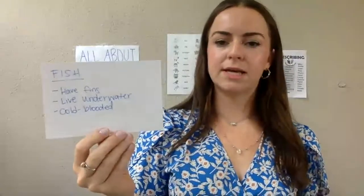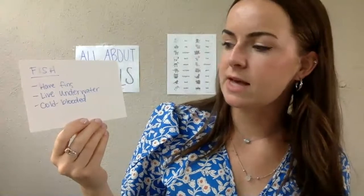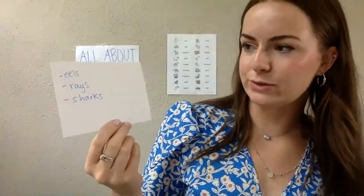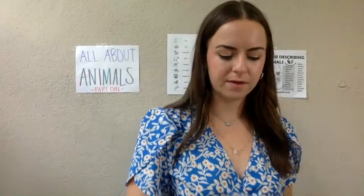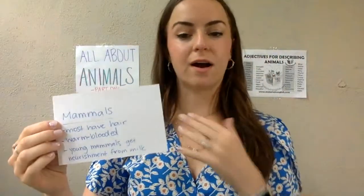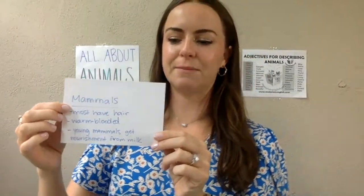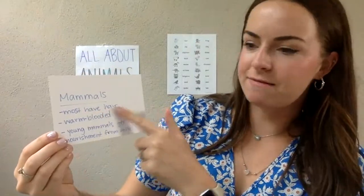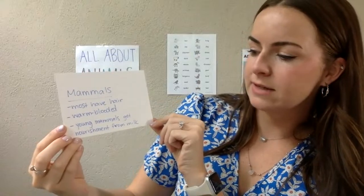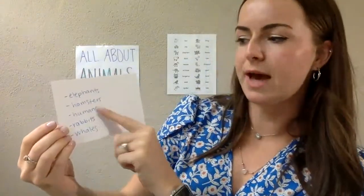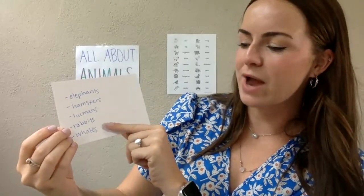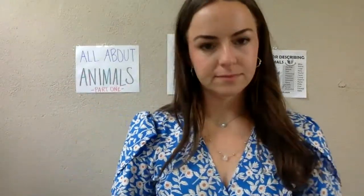Our next type of animal is fish. Fish have fins, they live underwater, and they are also cold-blooded. Examples of fish include eels, stingrays, and sharks. Our next one — which is what we are — is a mammal. Can you say 'mammal'? It's a fun word. Most mammals have hair, they're warm-blooded, and young mammals get nourishment from milk, typically from their mom. Examples of mammals include elephants, hamsters, humans, rabbits, and whales. They do not lay eggs.